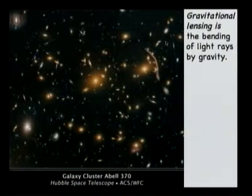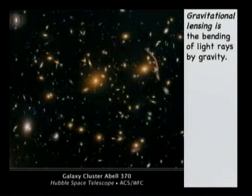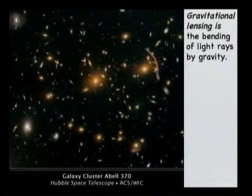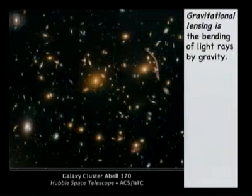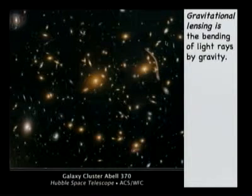In this image, everything that you see is a galaxy. Every little dot there is a galaxy. And remember that a galaxy is the equivalent of our Milky Way — it contains hundreds of billions of stars in each one of those galaxies.